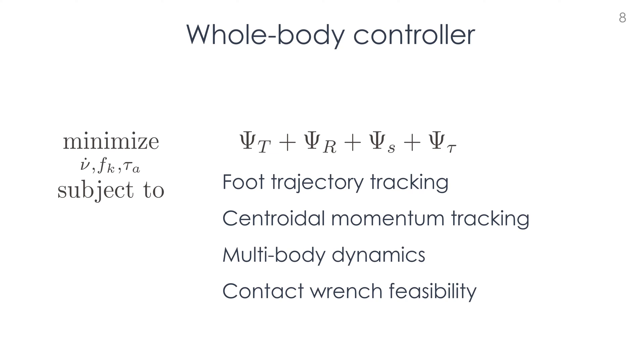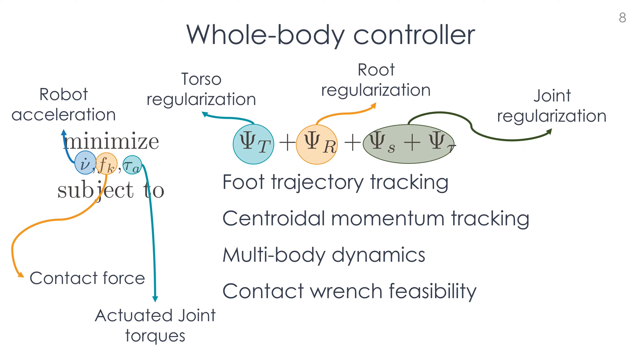The whole-body controller is an optimization problem, where we aim at finding the robot acceleration, the contact forces, and the actuated joint torques, while minimizing a cost function composed by several terms. Herein, we consider the torso, the root link, and the joint regularization tasks.